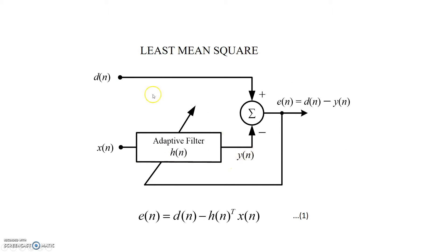So that the signal y(n) will be equal to the signal d(n). We are trying to train this x(n) signal by multiplying with h(n) so that the y(n) is equal to d(n).